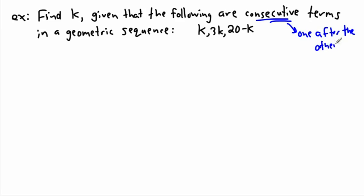That means one after the other. So really what you're told is that K, 3K, and 20 minus K, those are terms in a geometric sequence and they're consecutive, which means they go one after the other.